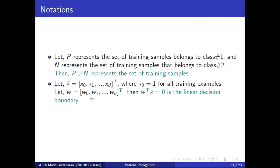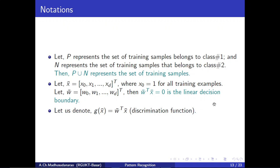And w-bar = [w0, w1, ..., wd], also (d+1)×1, including w0. Now, w-transpose · x-bar = 0 is a linear decision boundary. Expanding this gives: w0 + w1·x1 + w2·x2 + ... + wd·xd = 0, because x0 = 1. We denote g(x-bar) = w-transpose · x-bar, which is also called the discriminant function.